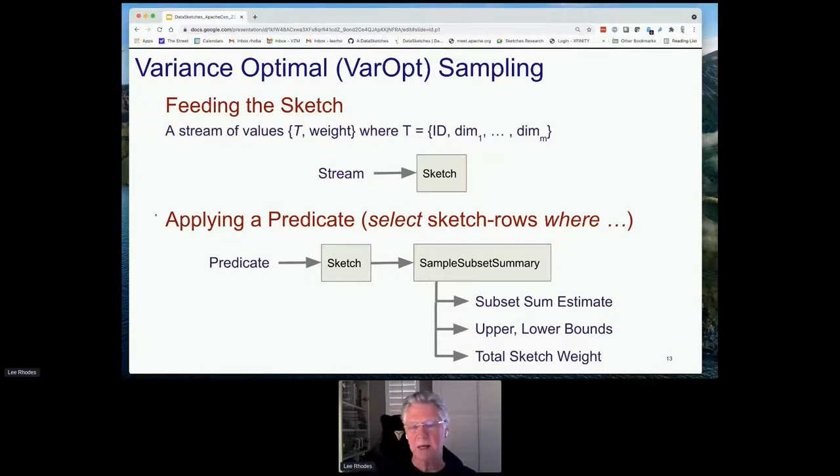Then you'll get a sample subset based on the predicate. The subset sum estimate has optimal variance. In other words, you can't do better than this given the approximation paradigm in terms of estimating the subset sum. It will have optimum error performance. As well, from the sketch, you get the upper and lower bounds of that error and the total sketch weight, so you can get a sense of what fraction the subset that you've pulled out or queried from the sketch represents of your entire data.